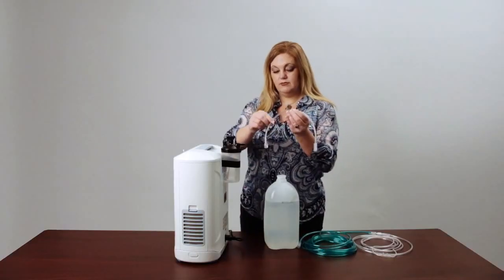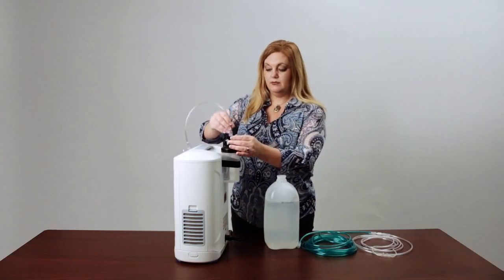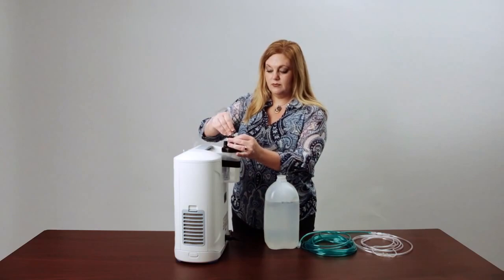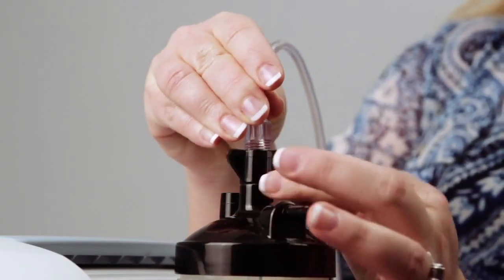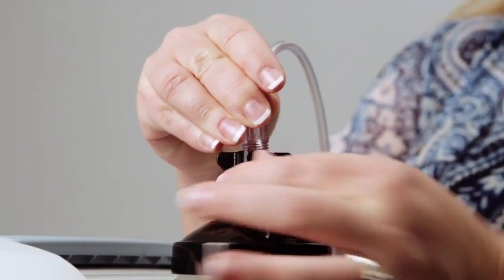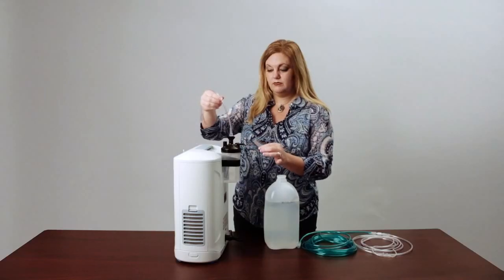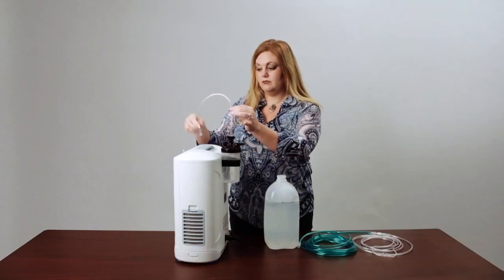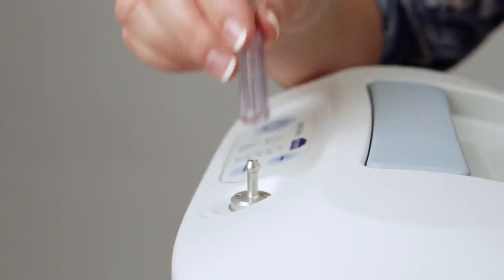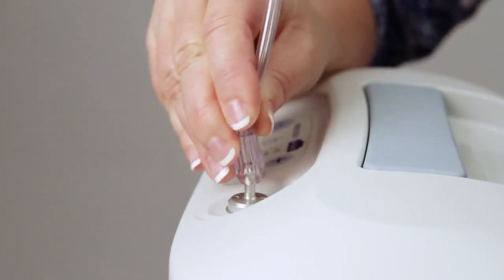Attach the oxygen tubing to the humidifier bottle adapter by turning the wing nut on the humidifier bottle counterclockwise until the oxygen tubing is securely fastened. Attach the oxygen tubing from the humidifier bottle to the oxygen outlet connector on the concentrator.